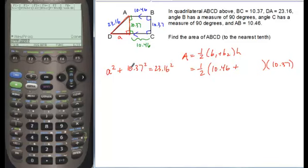And so we can go ahead and solve this problem. So if we took 23.16 and squared it, and then subtracted 10.37 squared, that's going to give us A squared is equal to 428.8487.